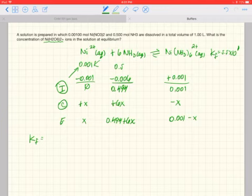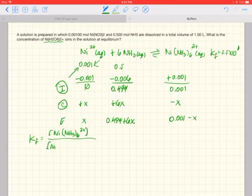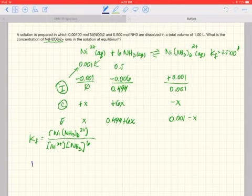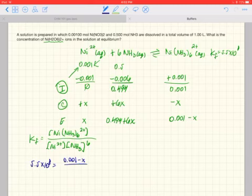Kf for this equilibrium process, products over reactants, so we have the nickel coordination complex over nickel ion over ammonia to the sixth power. So if we substitute in the values here, we get 5.5 times 10 to the eighth is equal to 0.001 minus x over x times 0.494 plus 6x to the sixth.